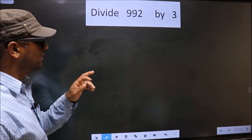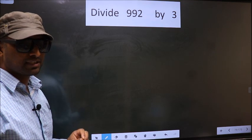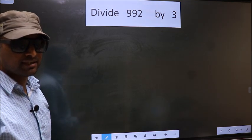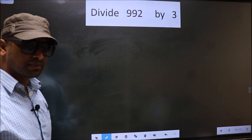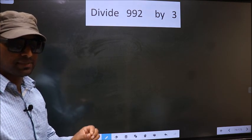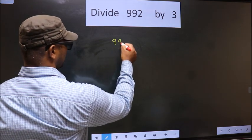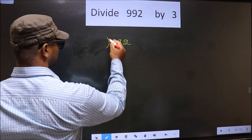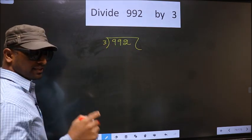Divide 992 by 3. While doing this division, many do this mistake. What is the mistake that they do? I will let you know. But before that, we should frame it in this way. That is 992, 3 here.